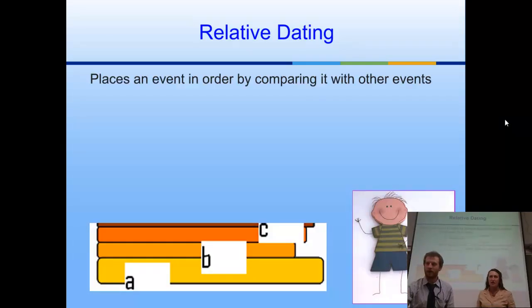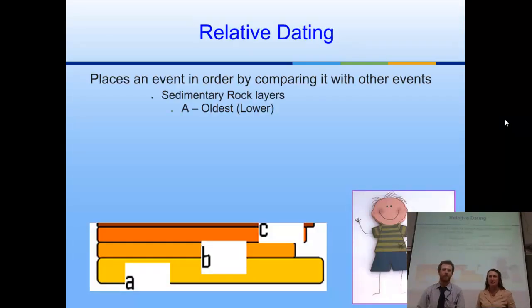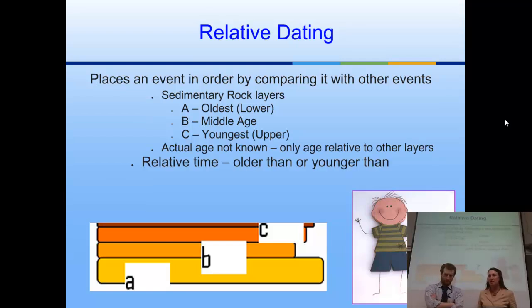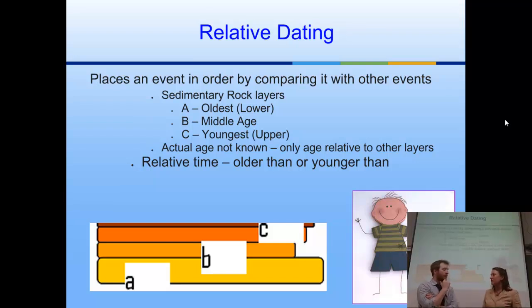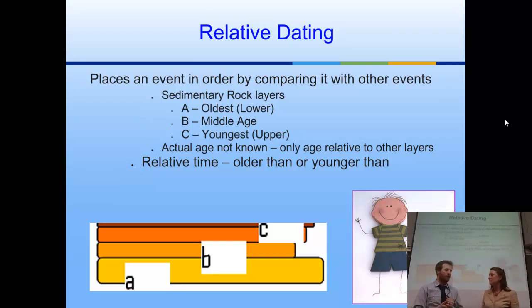This is a slide deck that has some fill-in-the-blank parts to it, so we'll be showing you the correct answers — make sure you're recording those as you go through the slideshow in your packets. So we're going to start out with a little relative dating. Now, relative dating is actually pretty simple. All you're doing is putting events in order based on when they happened.